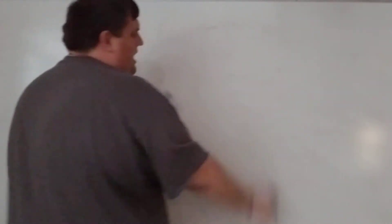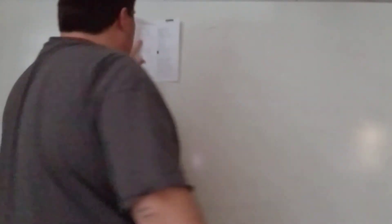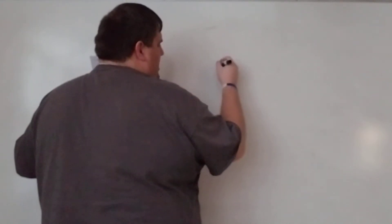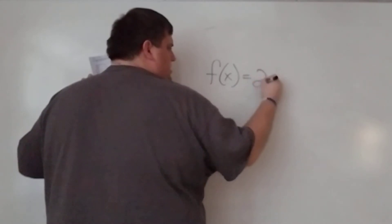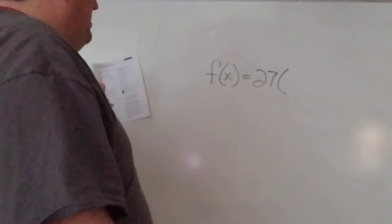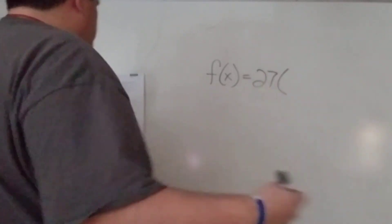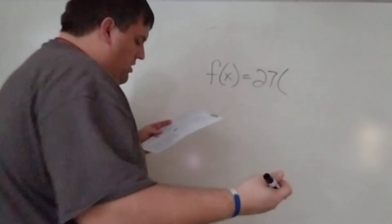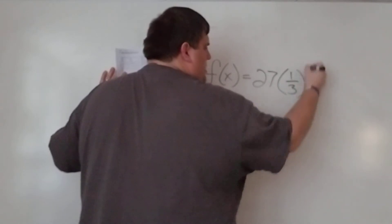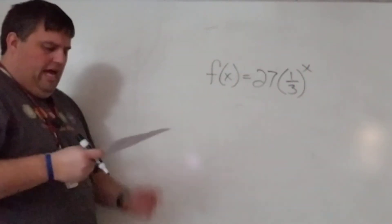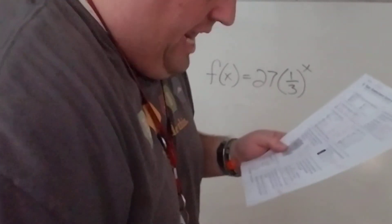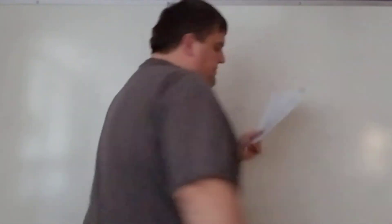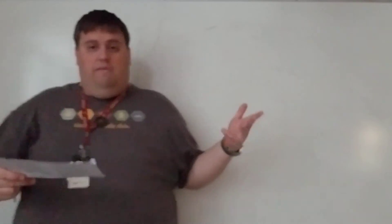Number eight, we flipped it — they gave the table and we had to write the equation. The starting point, or y-intercept, is 27, so that goes first. The common ratio — what you multiply by each time — is one-third, so the equation is 27 times one-third to the x. Number nine is definitely an exponential function because it doubles, meaning it has a constant ratio of two. The equation is f(x) equals six times two to the x.